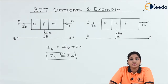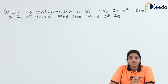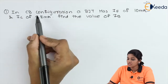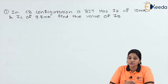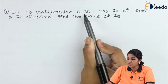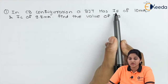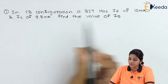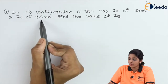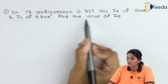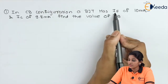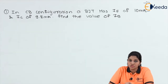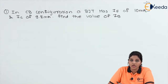Now let's take one example based on the same topic. In CB configuration, that means common base configuration — the diagram we considered just now is the common base configuration. In CB configuration, a BJT has emitter current IE of 10mA and collector current IC of 9.8mA. Find the value of IB, that means the base current.